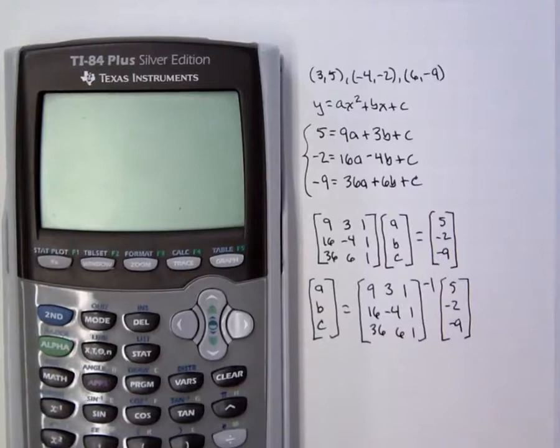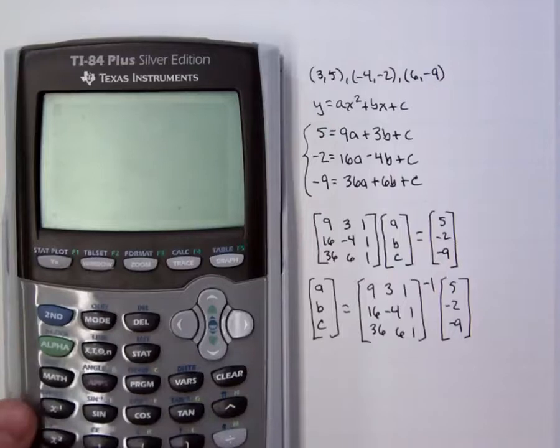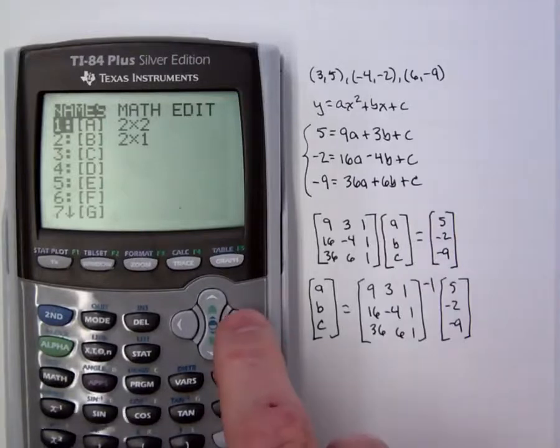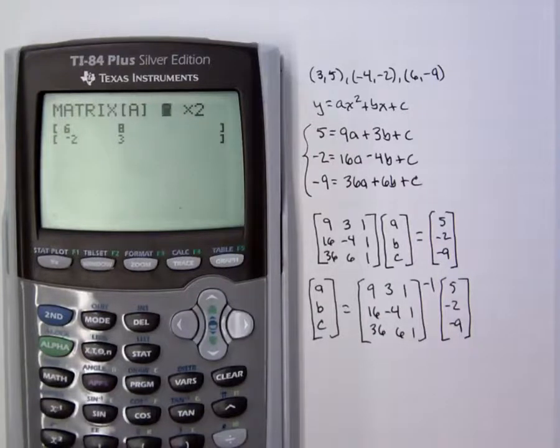So now we're ready to go to our calculator and perform that calculation. So we'll turn it on and we'll go to second matrix, which is the fourth button down on the left. We'll go over to the edit menu and we'll choose the very first option A and we need to set the dimensions as 3 by 3.